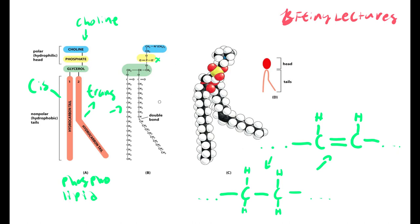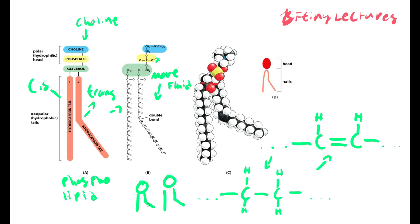Unsaturated fats are actually more fluid. The reason is that when they are stacked together, they cannot be close to each other — the phospholipids have a little kink in their tails, and that separates them apart, allowing them to wiggle around.